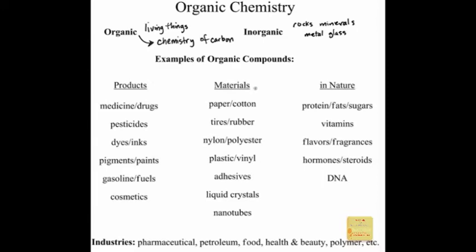A lot of materials we use in our world — natural as well as man-made — involve organic chemistry. The structure of paper, cotton, and rubber are carbon-containing compounds. Man-made versions are known as polymers: long chains of molecules like cotton or rubber. Examples include nylon and polyester, all plastics, vinyl, and adhesives — anything sticky or gooey is an organic molecule. Liquid crystals, like those in our LCD displays on phones and televisions, are organic molecules, and a lot of interesting research is going on there, as well as with nanotubes.